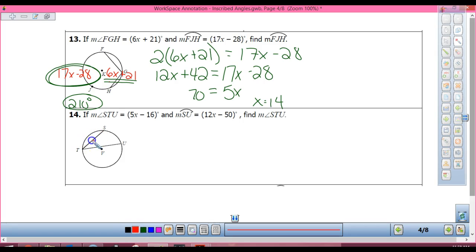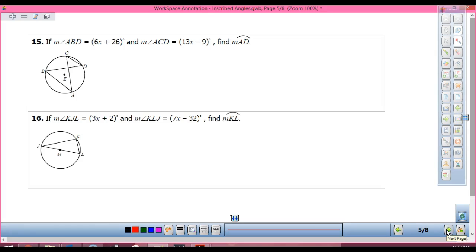So if my angle is 5X minus 16, and my arc is 12X minus 50, how are we setting it up? 2 times what? My angle. 2 times my angle equals my arc. I could take 5X minus 16 equals half of my arc, but then you're dealing with fractions, and we all know how much you love fractions.